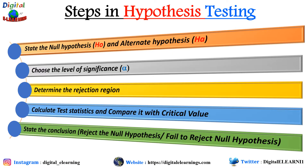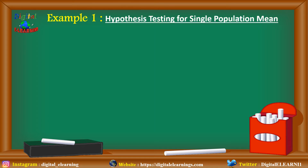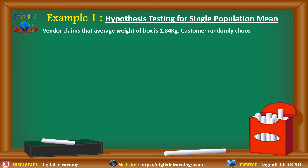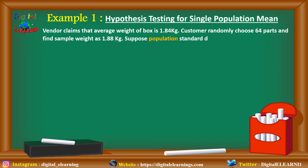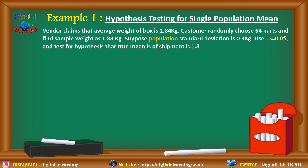Let us apply all these steps in different examples one by one. The first case is hypothesis testing for single population mean. The scenario: a vendor claims the average weight of a box is 1.84 kg. A customer randomly chooses 64 parts and finds the sample weight as 1.88 kg. The population standard deviation is 0.3 kg, and we use alpha equal to 0.05. We test whether the true mean of the shipment is 1.84 kg or not.